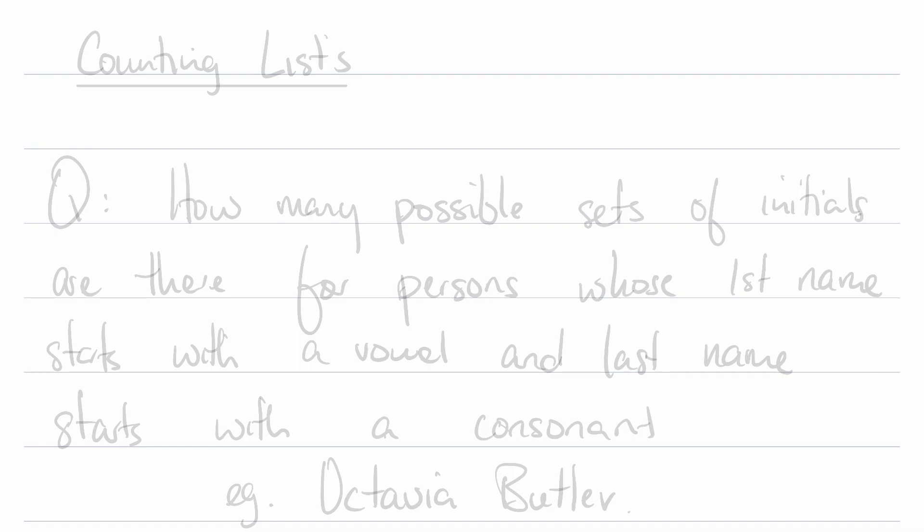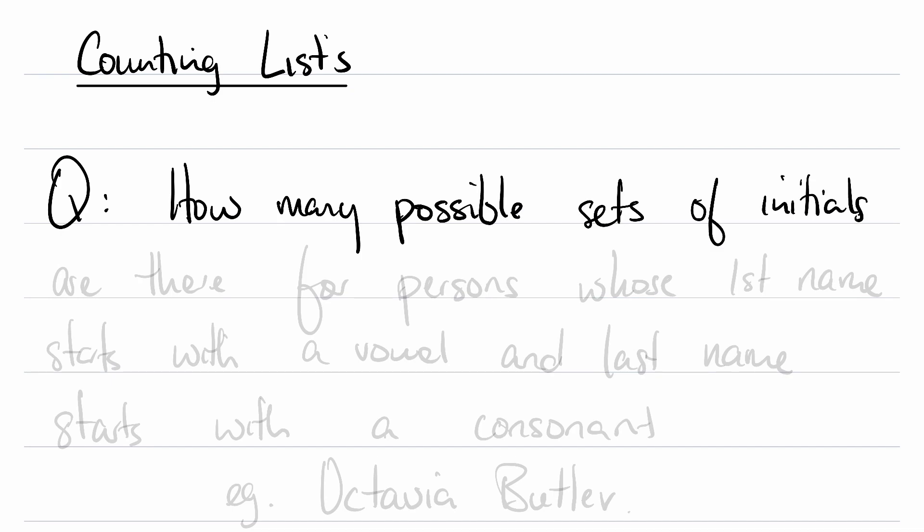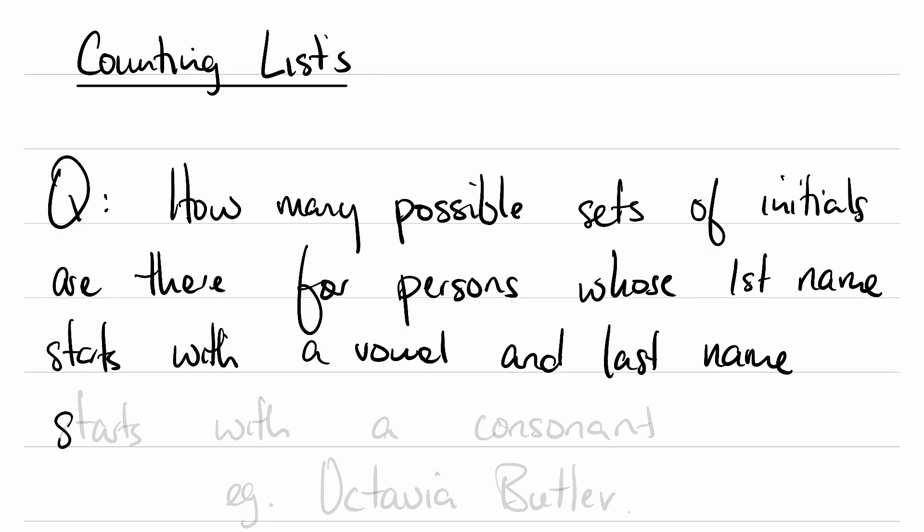Now that we know what a list is and we have some vocabulary around this, let's talk about how to count them. Let's start off by doing an example and asking a question. Here's a question for you: How many possible sets of initials for persons whose first name starts with a vowel and last name starts with a consonant?